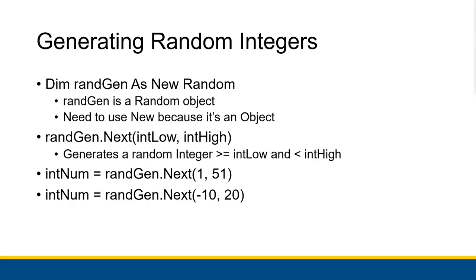To get integers out of a random number generator — and we can only get integers using this random object — you use the `Next` method. This method takes in two values: `intLow` and `intHigh`, which define the boundaries. The integer will be greater than or equal to `intLow` and strictly less than `intHigh`. For example, passing in 1 and 51 gives a number between 1 and 50 inclusive; passing in -10 and 20 gives a number between -10 and 19 inclusive.